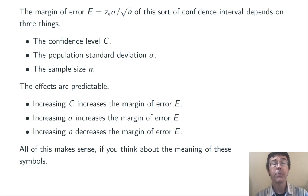By the way, all three of these things make sense algebraically as well, if you look at that formula: E = z*σ/√n. Again, z* and σ are both in numerators, so making either one of those bigger is going to increase the entire value E. n, however, is in a denominator, and so increasing n is going to decrease the value of E overall.